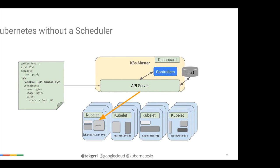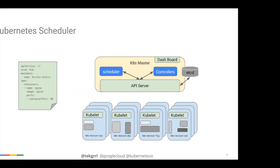On scheduling: without a scheduler, you can specify a node name directly in your pod spec to force a pod onto a specific node, but that's not how you should do it. The scheduler component makes scheduling decisions automatically — it looks at the pod and the cluster and decides where to schedule that pod. Bin packing components will come to Kubernetes in the future and will eventually match Borg's capabilities.